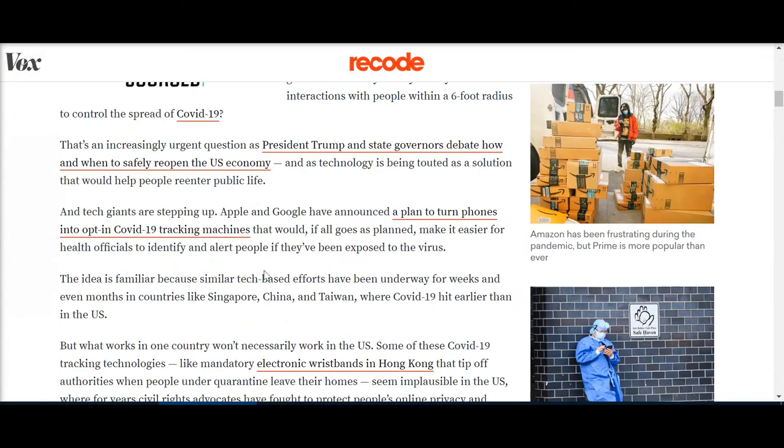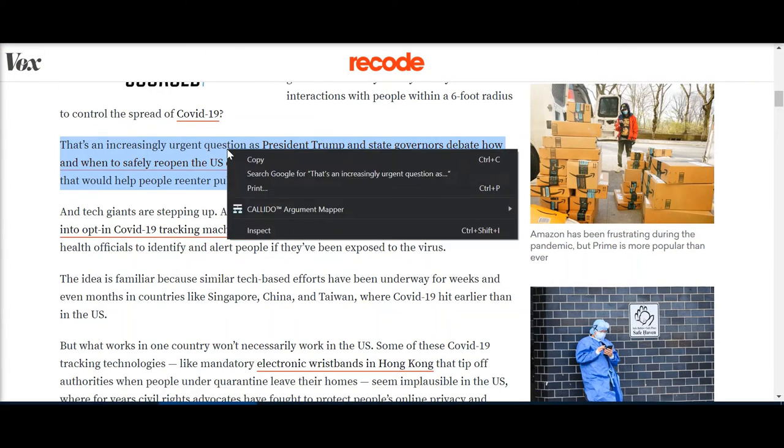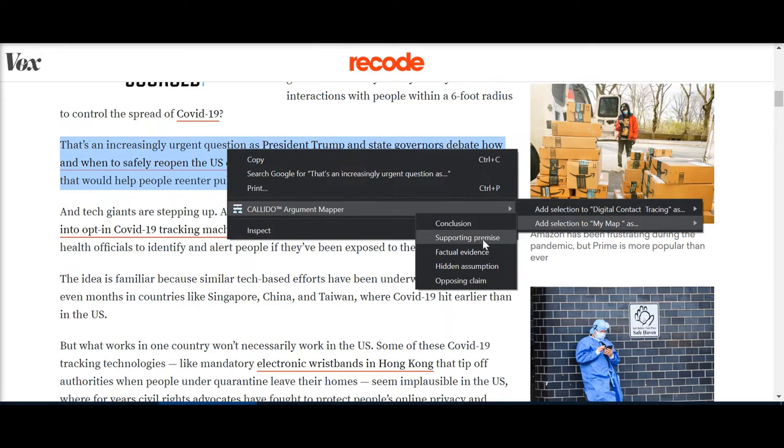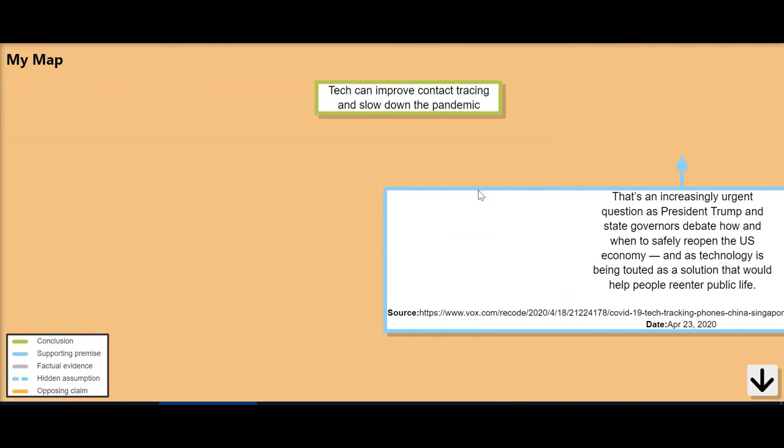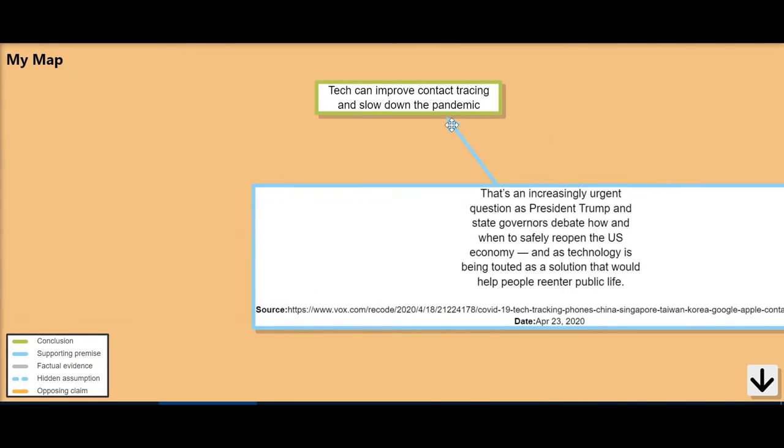As I go here I might find a snippet that's a supporting premise. I've got my conclusion and I add this to my map as a supporting premise. When I go back you can see it's grabbed that part of the text I was interested in as a supporting premise along with the source and the date I accessed this.